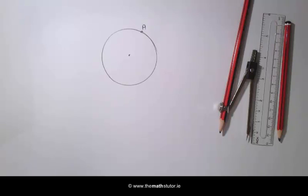We are going to construct a tangent to a given circle at a given point on it. In this example, we are going to construct a tangent at the point A. A tangent is a line that touches the circle at only one point. We also know that the tangent is perpendicular to the radius.